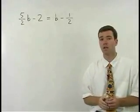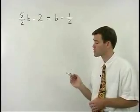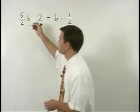What that means is we can get rid of both fractions at once by multiplying both sides of the equation by 2.